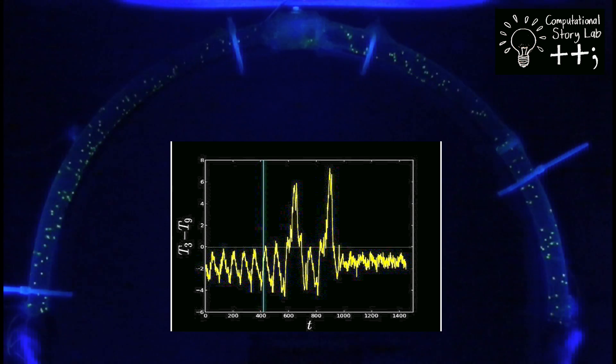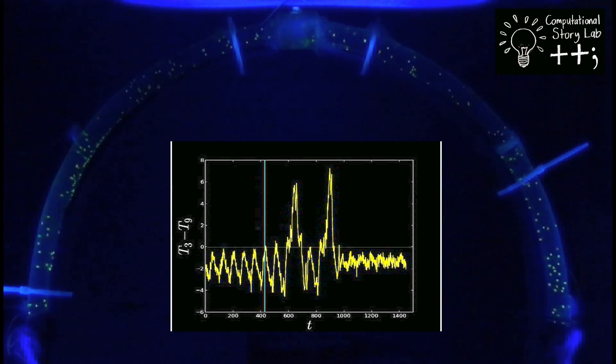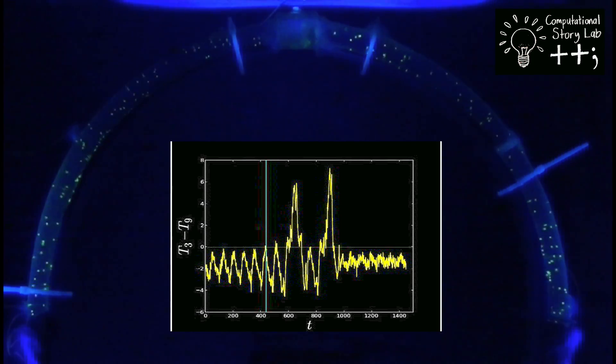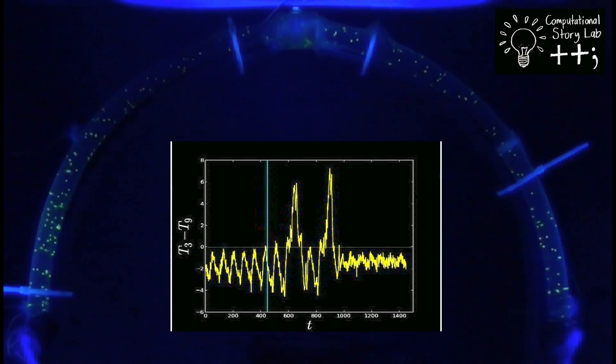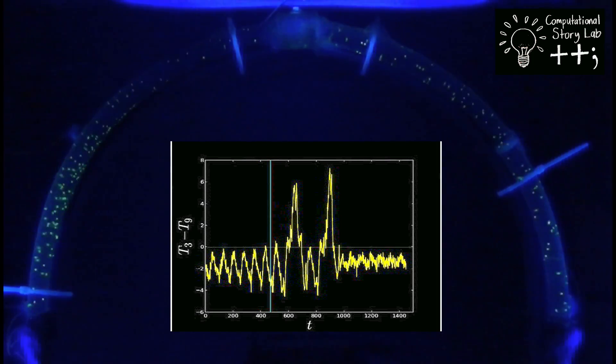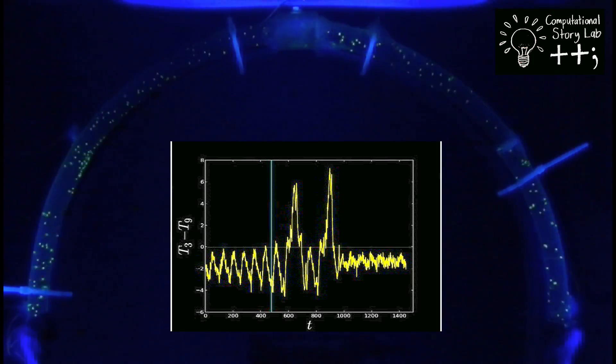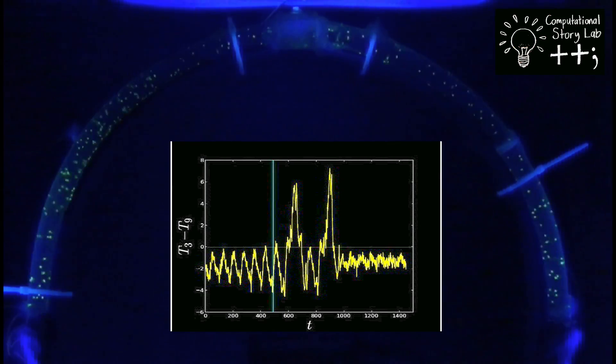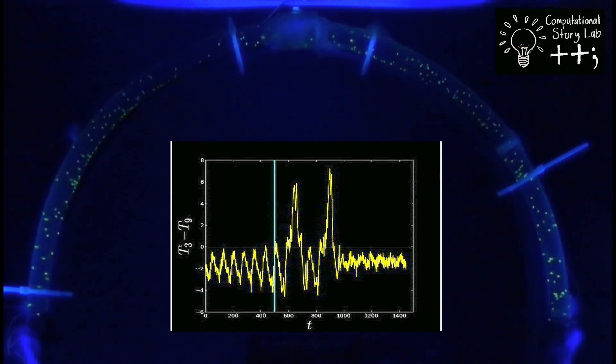This thermal convection loop is a hula hoop shaped tube filled with water. The bottom half of the tube is heated by a fixed temperature coil and the top half is cooled by room temperature air.